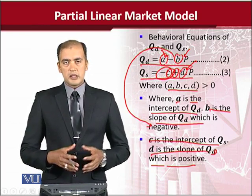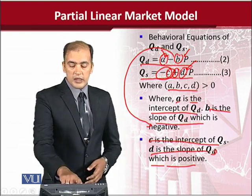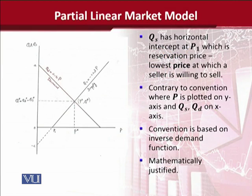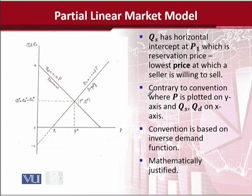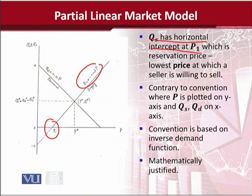We should look at this situation in terms of a graph. On the left hand side you can see the graph. QS has a horizontal intercept at P1 — this is a very important point with an economic interpretation. It is called the reservation price: the minimum price at which the seller is interested in selling. Below P1, the seller is not interested as it is not cost effective. Before the price level P1, no supply occurs; after P1, supply begins.